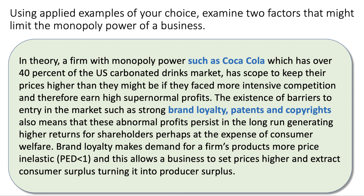First, we need to think about monopoly power. My first analysis paragraph: firms with monopoly power — Coca-Cola, for example — have over 40% of the market for carbonated drinks and scope to keep prices higher than if they faced more intensive competition. Barriers to entry such as strong brand loyalty and patent/copyright protection mean abnormal profits persist in the long run. Brand loyalty makes demand more price inelastic, allowing firms to set higher prices and extract consumer surplus, turning it into producer surplus.